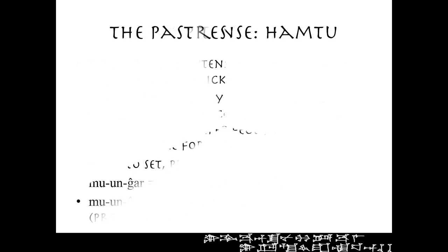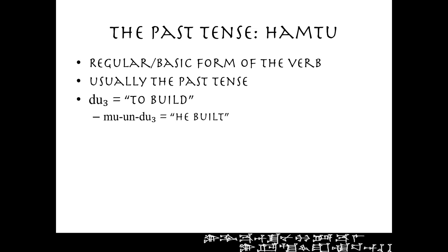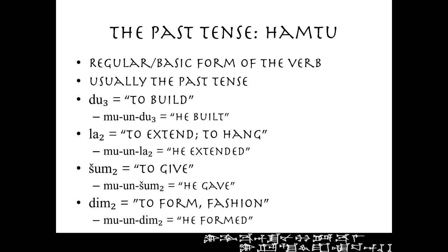The past tense — what we're calling hamtu — the regular or basic form of the verb is the hamtu form. It's usually the past tense. The verb do3, 'to build': mu-un-do3 means 'he built.' Latu, 'to extend or to hang': mu-un-latu, 'he extended.' Shumtu, 'to give': mu-un-shumtu, 'he gave.' Dimtu: mu-un-dimtu, 'he formed.' Note the N that appears before the verbal base — this indicates the agent of a transitive verb, meaning 'he.' There's no inflection to the verbal base itself; it's just the simple, regular, basic form of the verb.